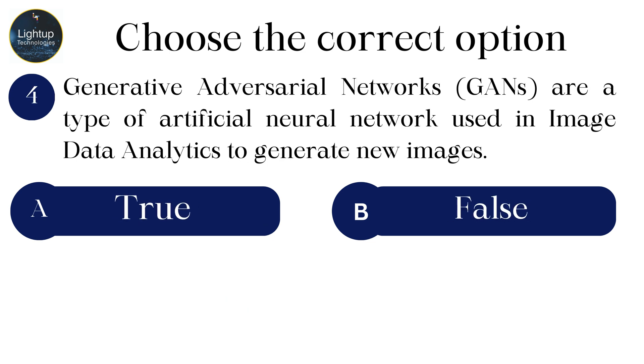Generative adversarial networks are a type of artificial neural network used in image data analytics to generate new images.